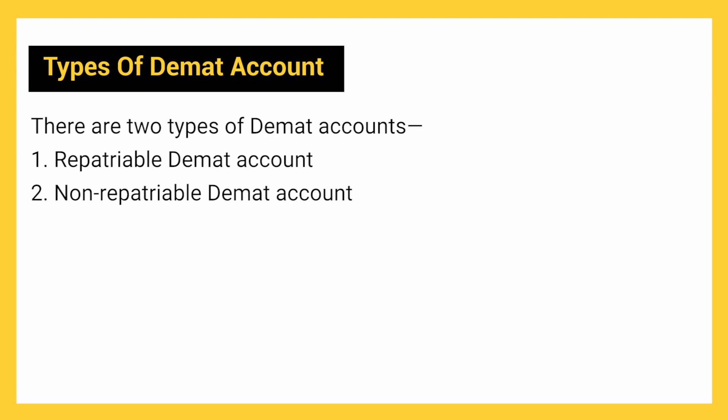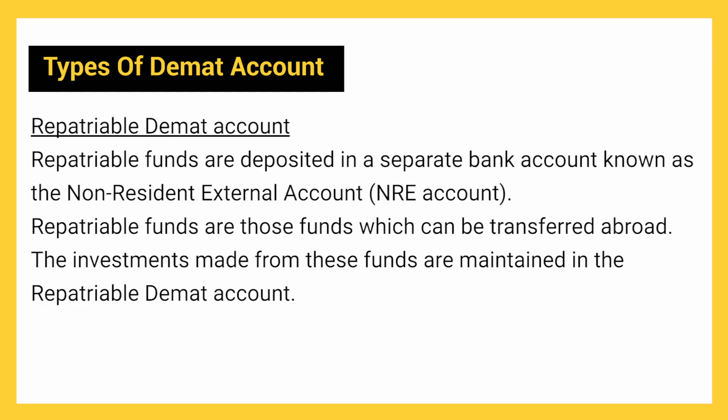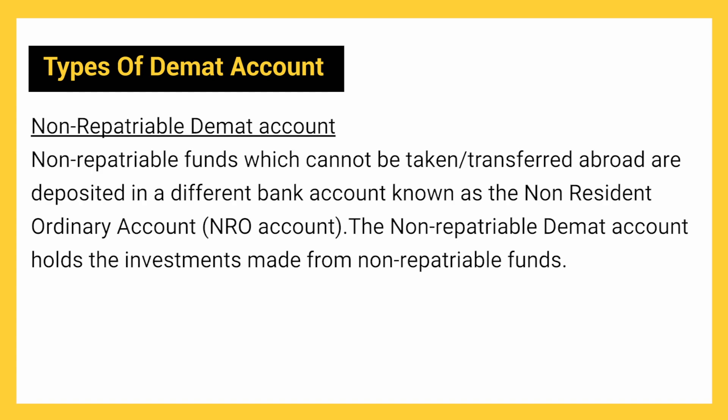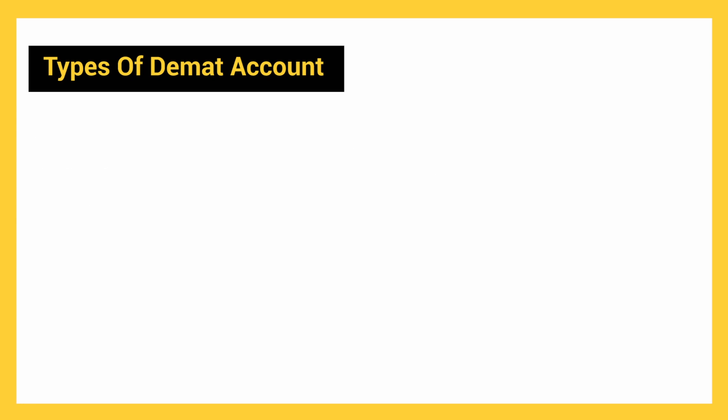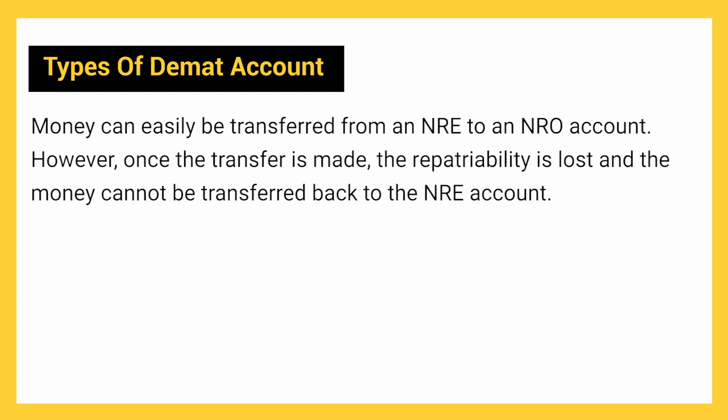There are two types of DMAT accounts: repatriable DMAT account and non-repatriable DMAT account. Repatriable funds are deposited in a separate bank account known as the non-resident external account, also known as the NRE account. Repatriable funds are those which can be transferred abroad, and the investments made from these funds are maintained in the repatriable DMAT account. Non-repatriable funds, which cannot be transferred abroad, are deposited in a different bank account known as the non-resident ordinary account, also known as the NRO account. Money can be easily transferred from an NRE to an NRO account; however, once the transfer is made, the repatriability is lost and the money cannot be transferred back to the NRE account.